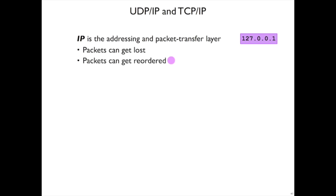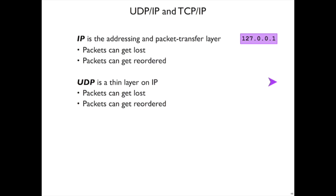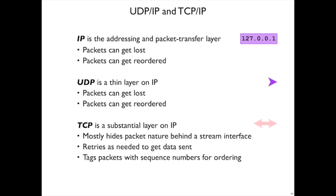We will not deal with raw IP, but UDP is just a thin layer on IP, so it inherits those properties. Packets can get lost. Packets can get reordered.